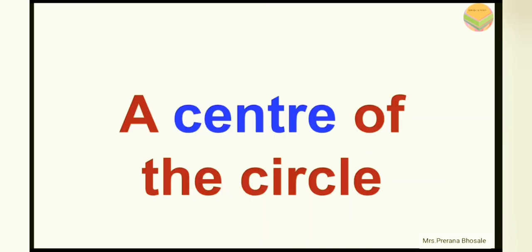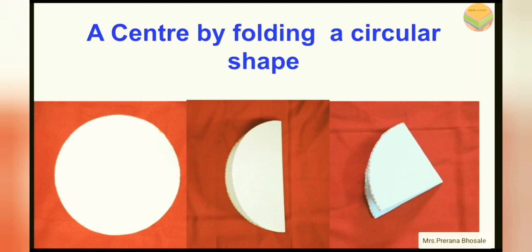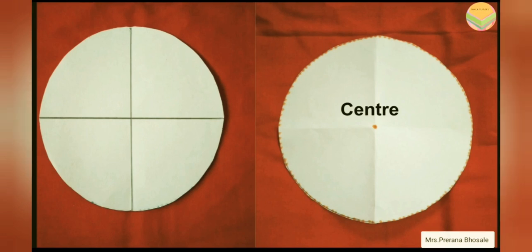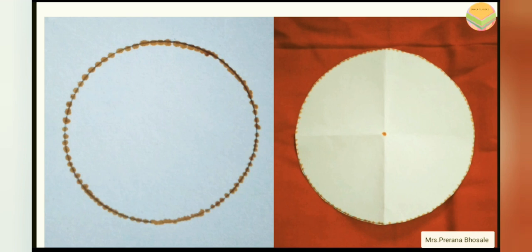Now let's see what is the center of the circle. For this, again you have to take a circular shape. Now fold it as given in the picture. You will get a quarter part of the shape. Now open it. You will get the circular shape again. Now trace the lines of the fold. The point at which these lines meet each other is the center of the circle. And students, one more thing you should keep in mind — the circle is only composed of the points on the border, and these points are equidistant from the center of the circle.